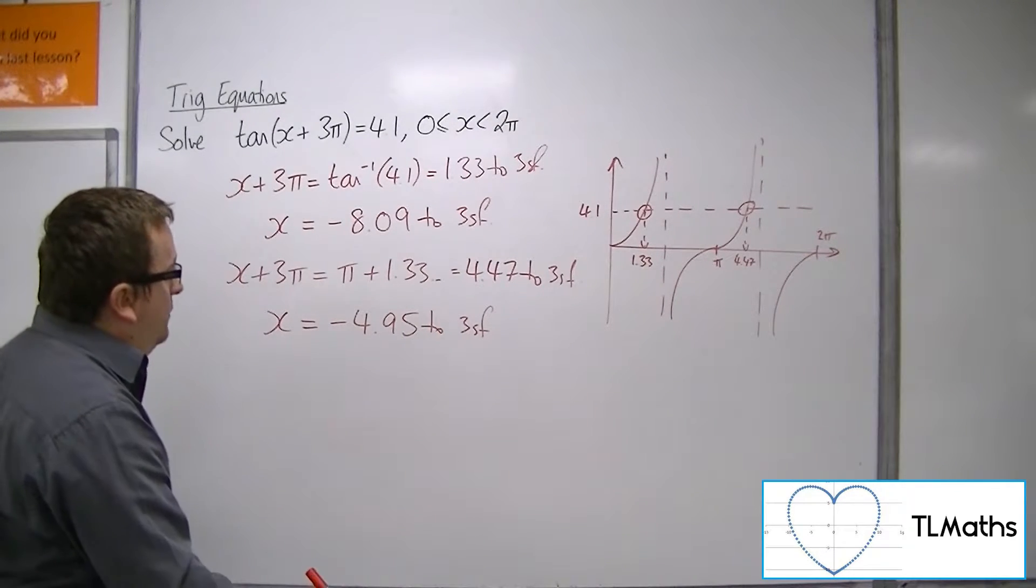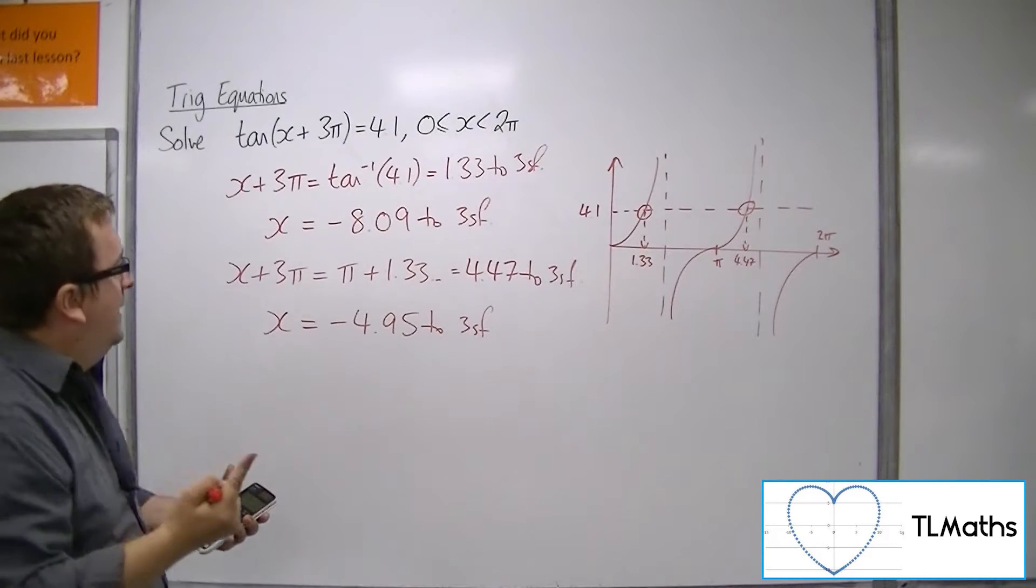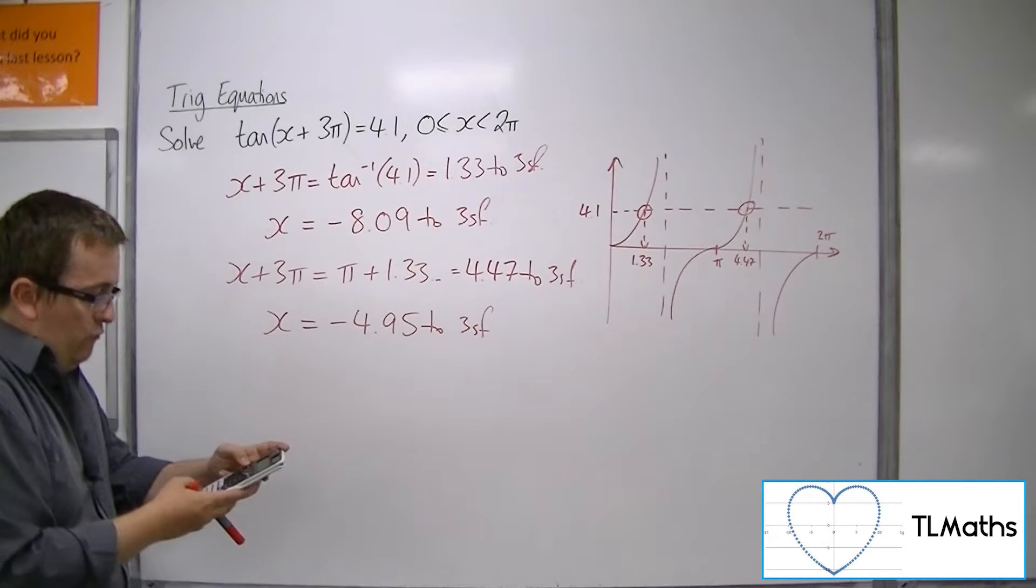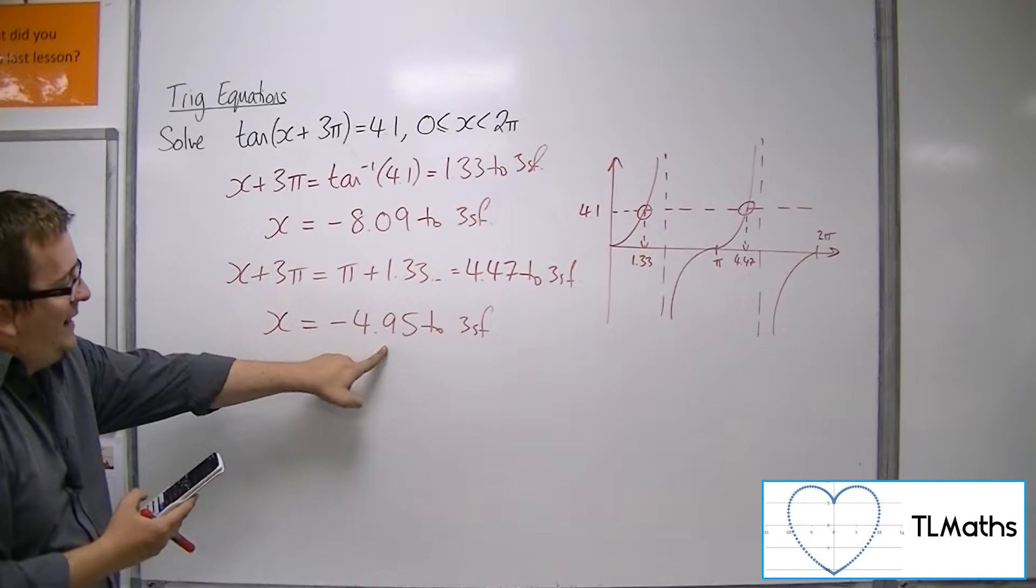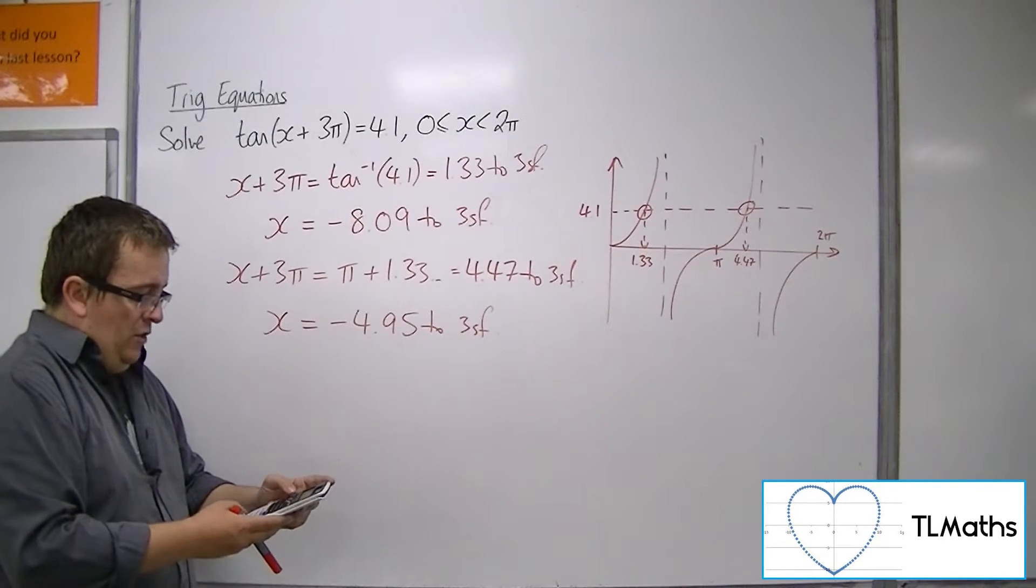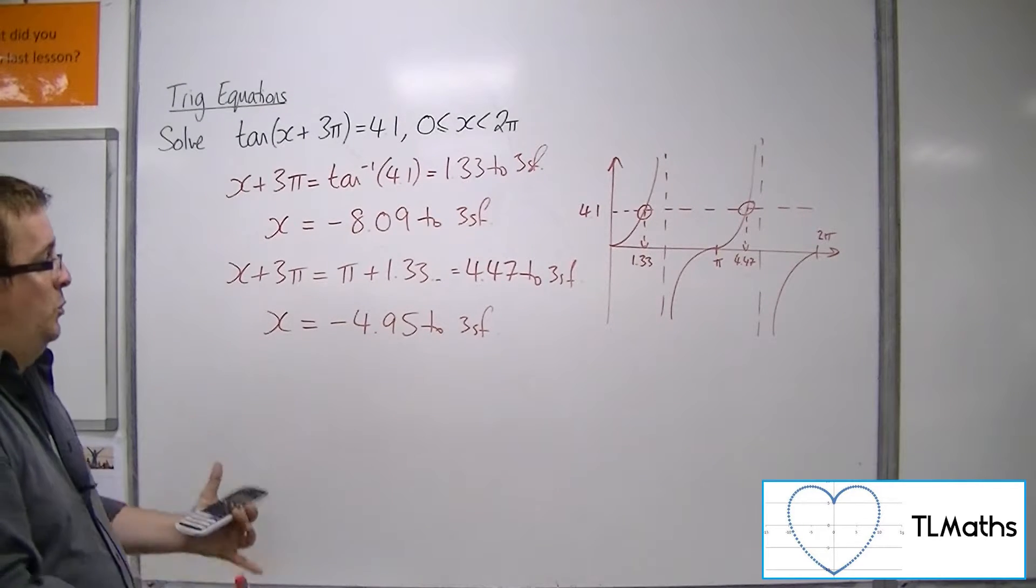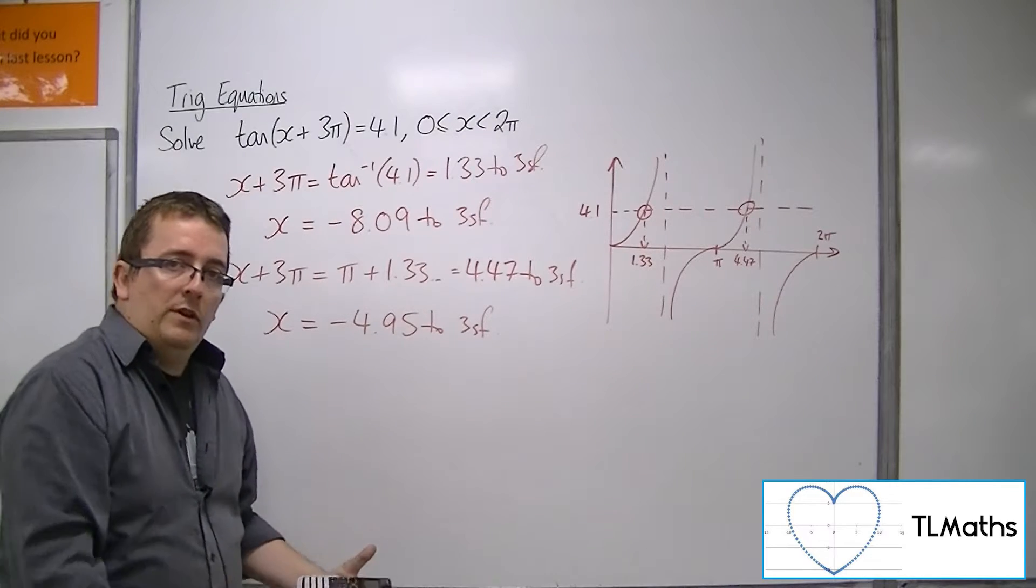But the thing is, not only does adding π to minus 8.09 get me back to that one, but adding on π progressively until I get to 2 solutions that are between 0 and 360.